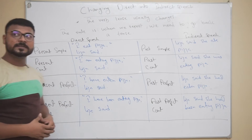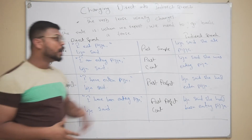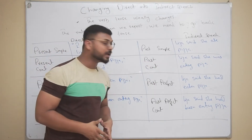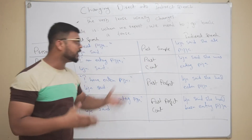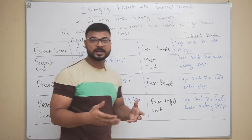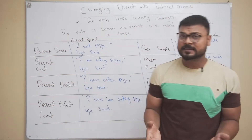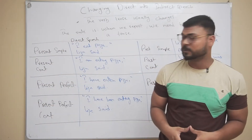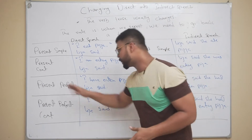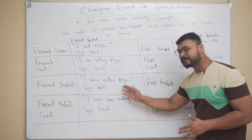For present continuous: 'I am eating pizza,' Lisa said. When it comes to indirect speech, it's going to be: she said that she was eating pizza — or Lisa said that she was eating pizza.